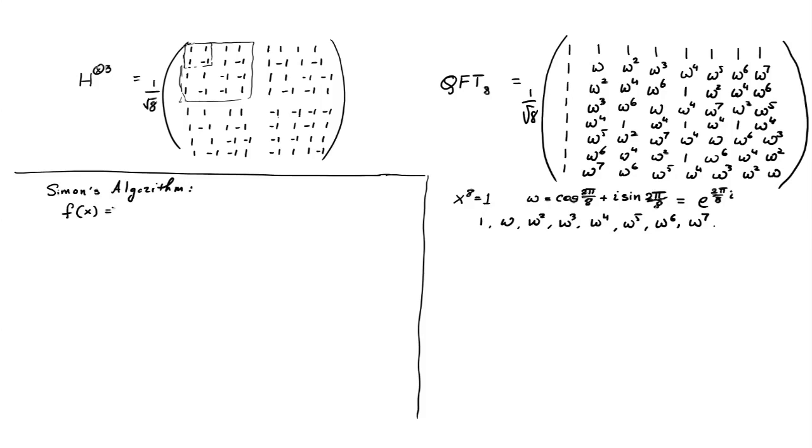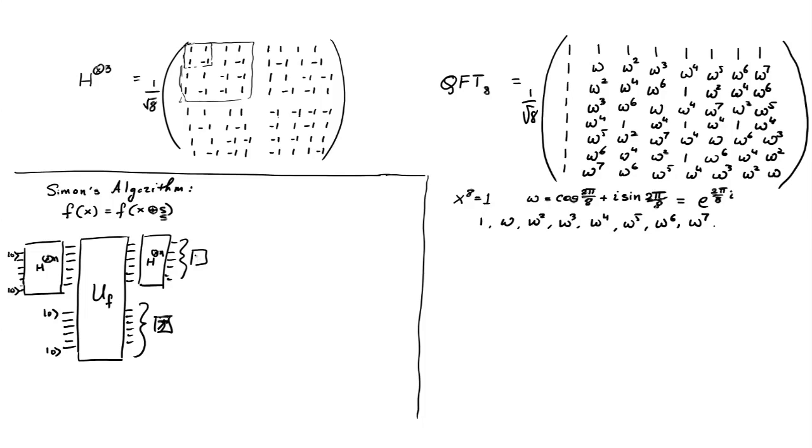And our challenge was to discover this number s. The algorithm involved the Hadamard transform, so what we did was, we had n qubits, initially zero, we applied the Hadamard transform to them, then we applied the function f, we had some more inputs, which were zeros, we measured these supplementary qubits, we applied a Hadamard transform again to the first n qubits, we measured, we got some value u, and u gave us a linear equation about s. So u dot s was zero, we collected n such linear equations, and we solved for s.